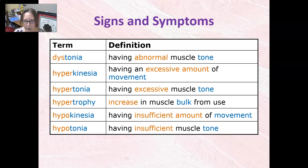Dystonia is having abnormal muscle tone. Hyperkinesia is having an excessive amount of movement. Hypertonia is having excessive muscle tone.